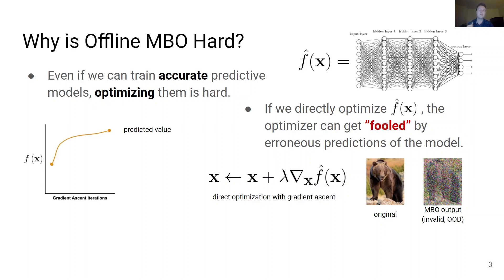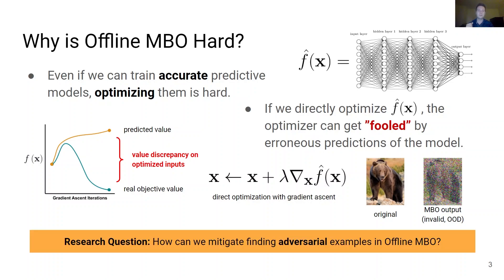When evaluating on these out of distribution adversarial inputs, even accurate models can be fooled into predicting high objective values that continuously improve as additional optimization steps are taken. In reality, the true objective value diverges from the predicted objective value and can degenerate to values even lower than where the optimization process started. On optimized inputs, there is a discrepancy between even an accurate predictive model and the real objective. Adversarial examples like this pose a significant challenge to offline model-based optimization and mitigating them is an important research question in order to build more reliable optimization methods, which we explore in this work.